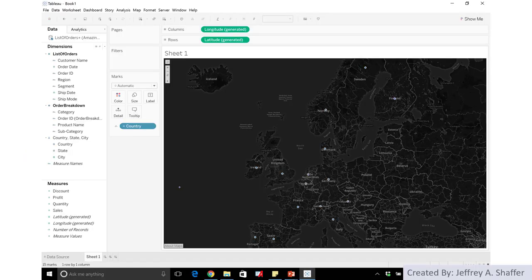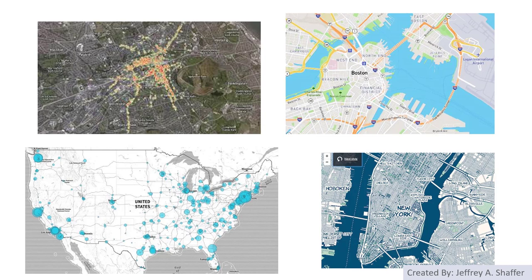Here is one example showing the base map from Tableau alongside additional options available in Mapbox. You can choose different layout styles for base maps to create very beautiful maps in Tableau, bringing background maps from Mapbox into your Tableau data visualization.